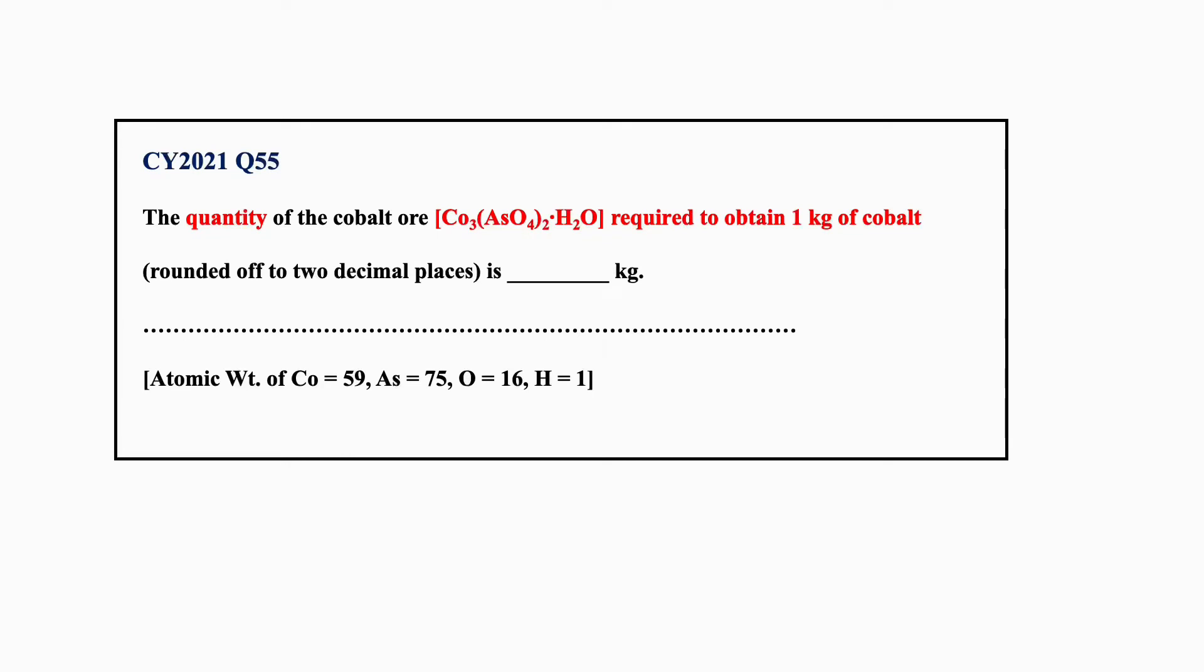In this video we will be discussing question number 55 from Chemistry GATE exam 2021. The question is: the quantity of the cobalt ore [Co₃(AsO₄)₂·H₂O] required to obtain 1 kg of cobalt is ____ kg. The answer should be rounded off to two decimal places. Atomic weights for cobalt, arsenic, oxygen, and hydrogen are given.